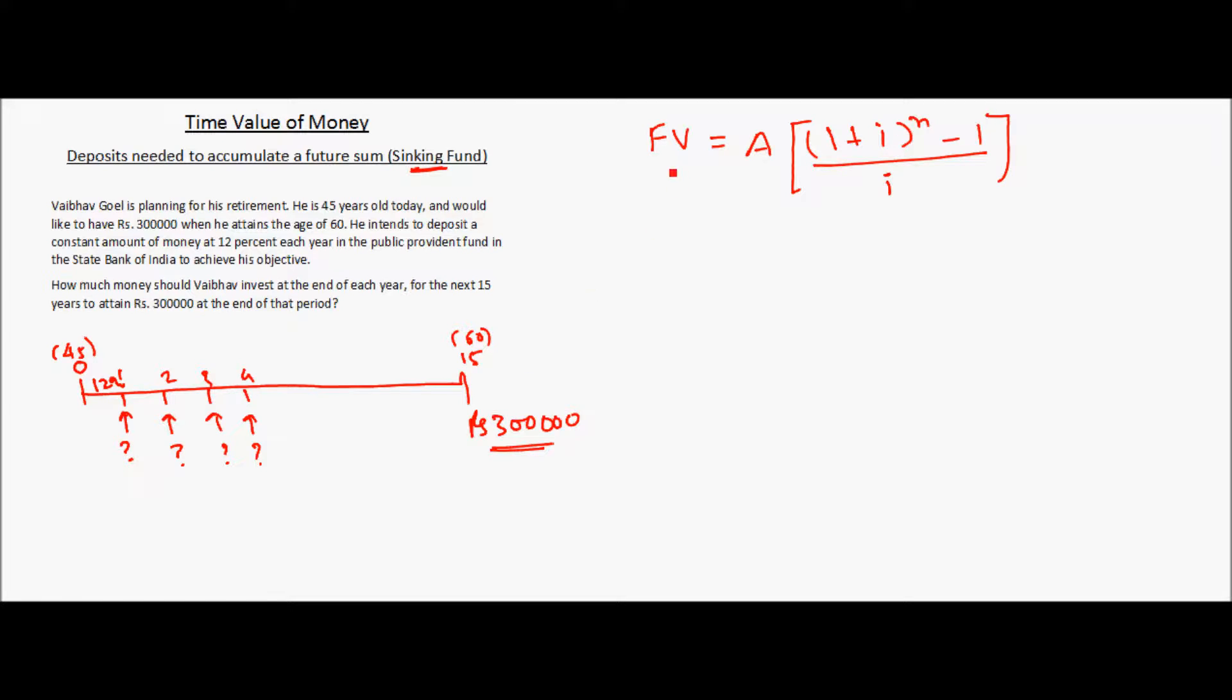Let's plug in the values. So the future value is 300,000. A is to be found out. 1 plus i is 12%, so 0.12. n is the number of periods, which is 15.